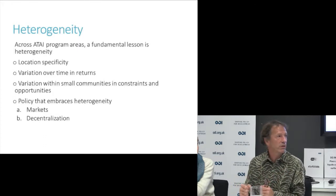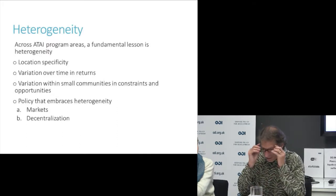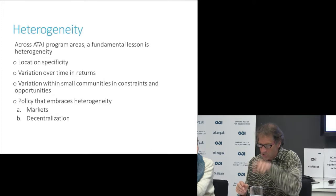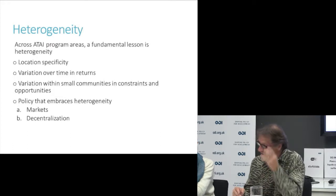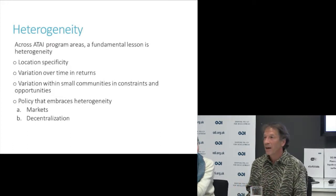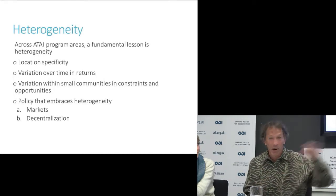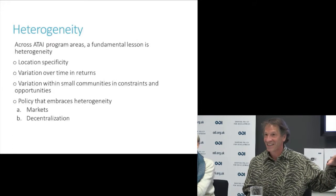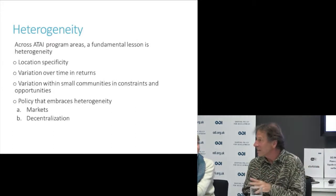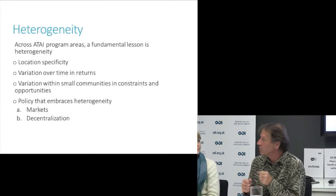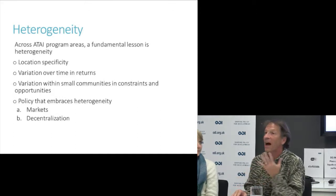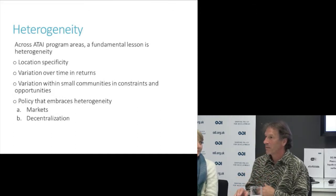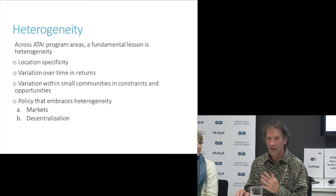My final point, echoing what Agnes and Ruth said: don't search for simple solutions. Get past social engineering. Embrace that heterogeneity. Markets allow people to voluntarily select into things. Decentralization and more organic solutions rather than uniform top-down solutions make sense. It's Jim Scott's 'Seeing Like a State' reemerging alongside Chicago price theory. Thank you.